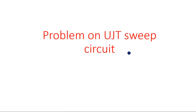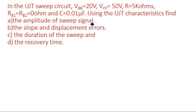In this video I am going to explain the solving of a problem on a UJT relaxation oscillator or UJT sweep circuit. An example problem is given: in the UJT sweep circuit, Vbb is equal to 20 volts and Vyy is given as 50 volts. The capacitor charges up to Vyy, that is up to 50 volts, and Vbb is given as 20 volts.